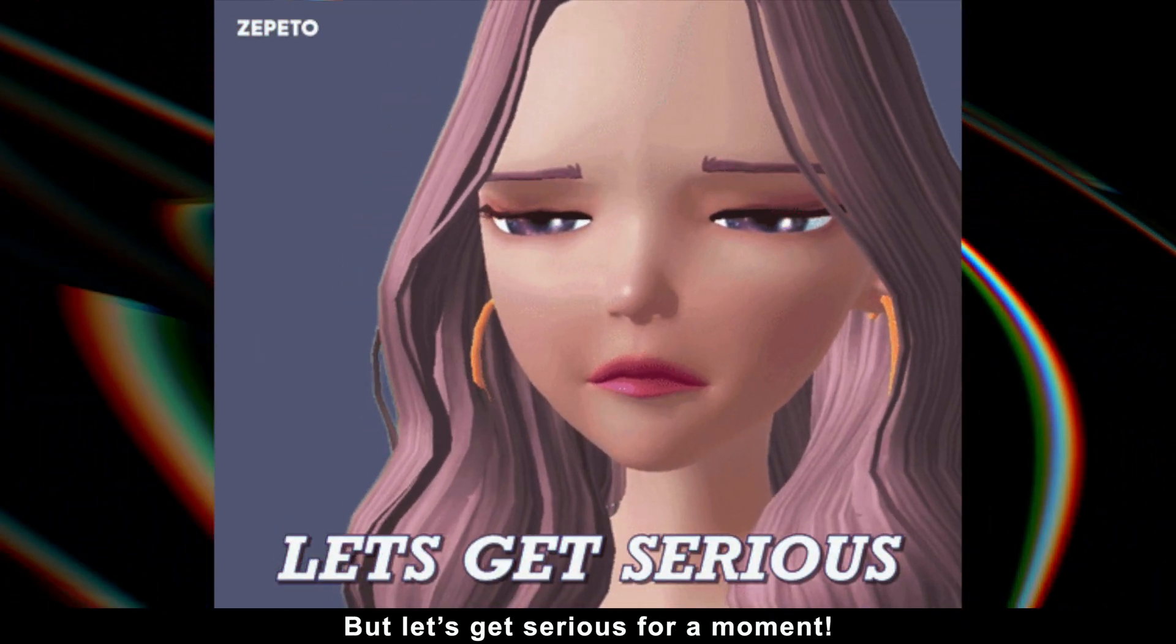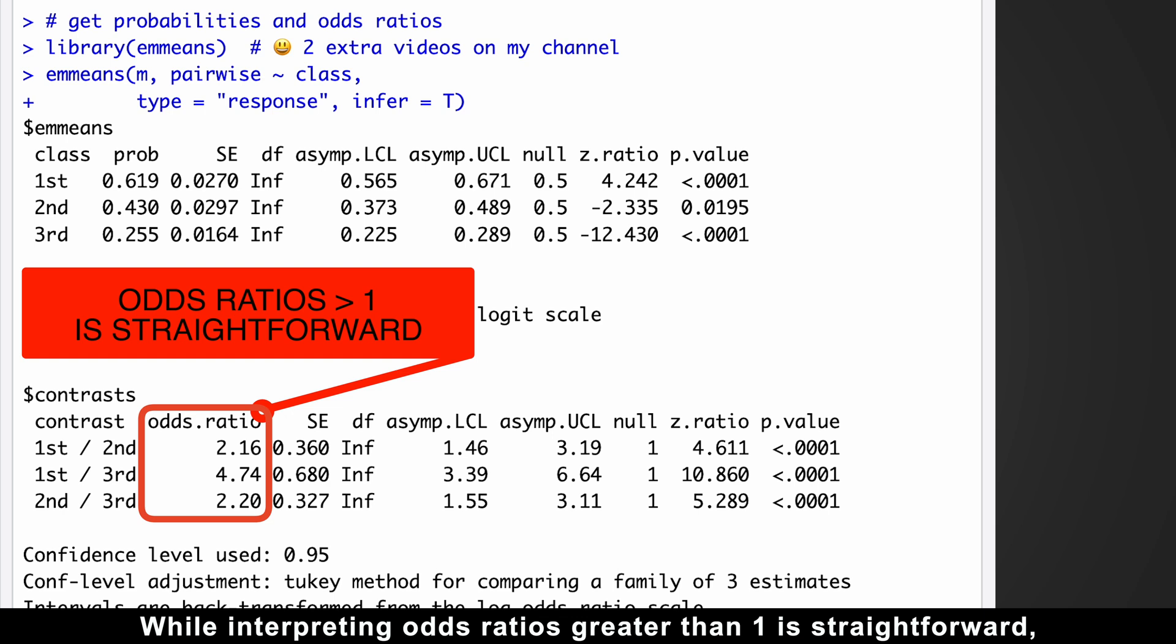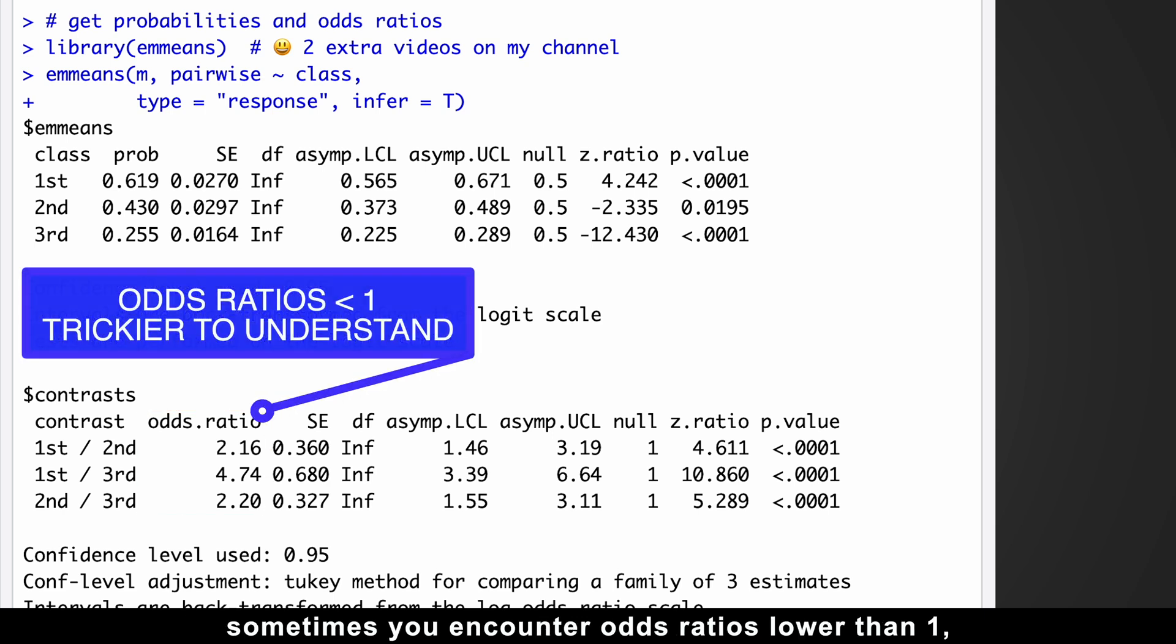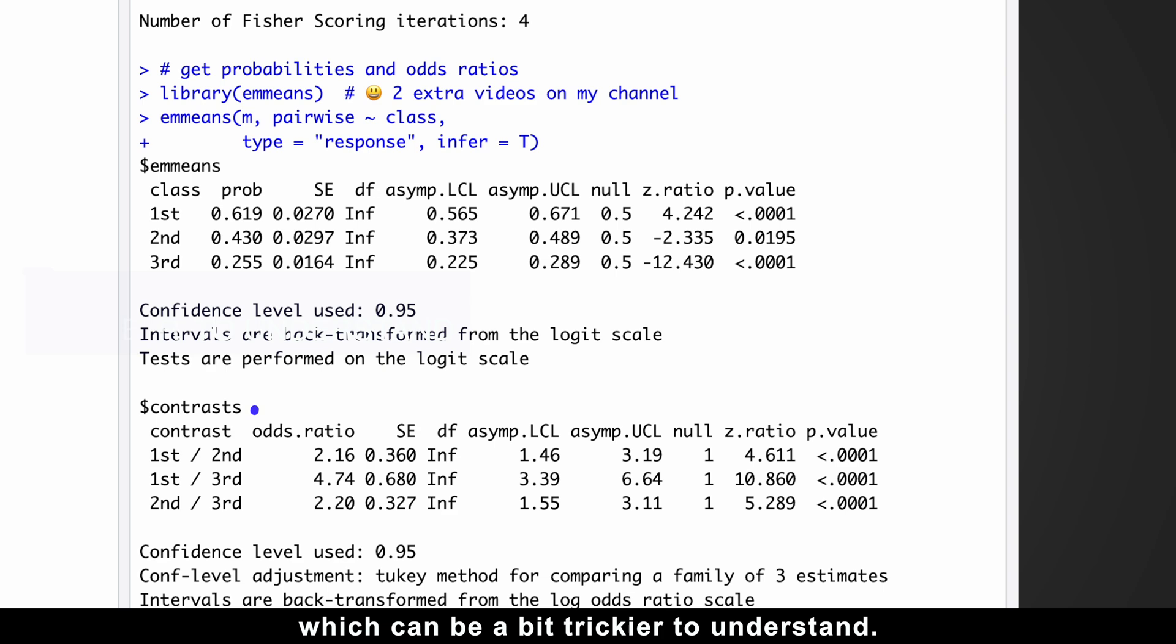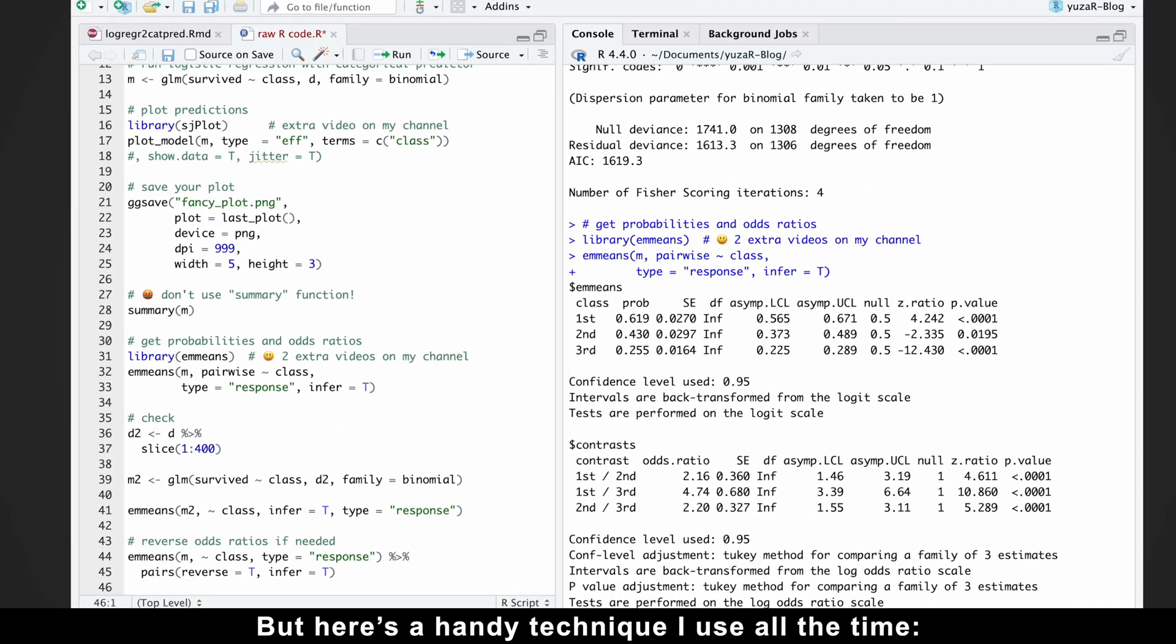But let's get serious for a moment. While interpreting odds ratios greater than 1 is straightforward, sometimes you encounter odds ratios lower than 1, which can be a bit trickier to understand. But here is a handy technique I use all the time.